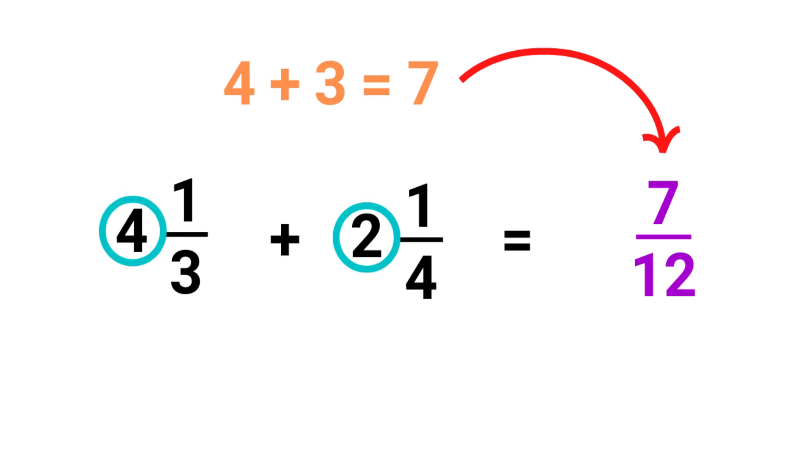Finally, we just add these whole numbers together. So 4 plus 2 is 6, and 6 is the whole number of our answer. The answer is 6 and 7 over 12. Pretty cool, huh? That's the easiest trick to add mixed numbers.